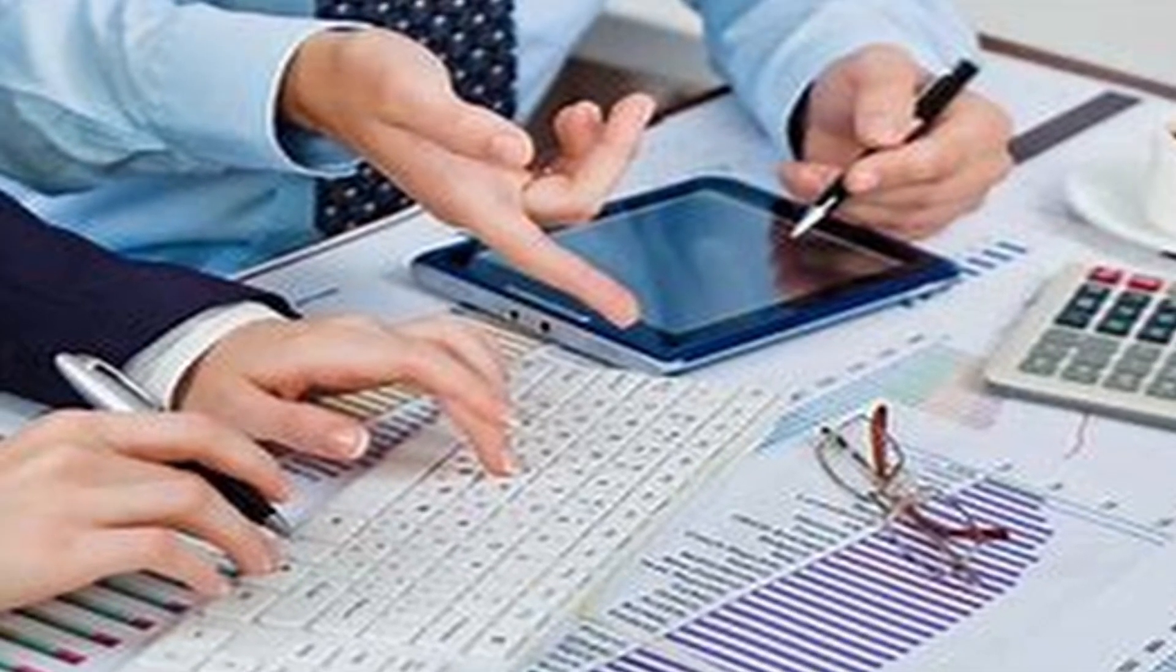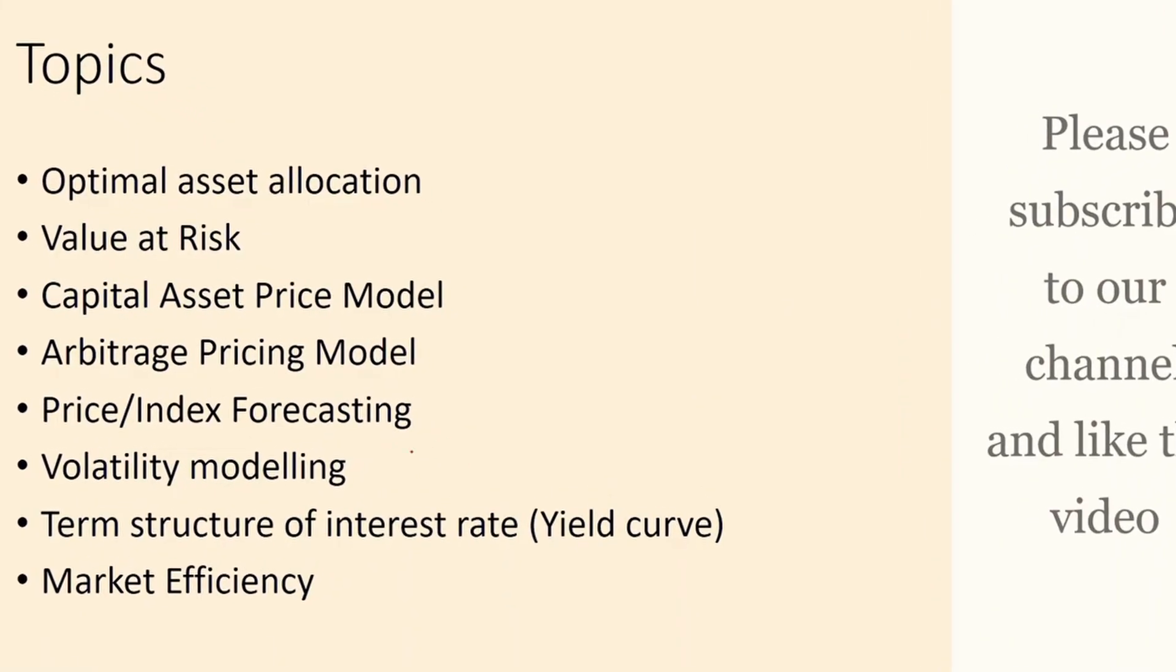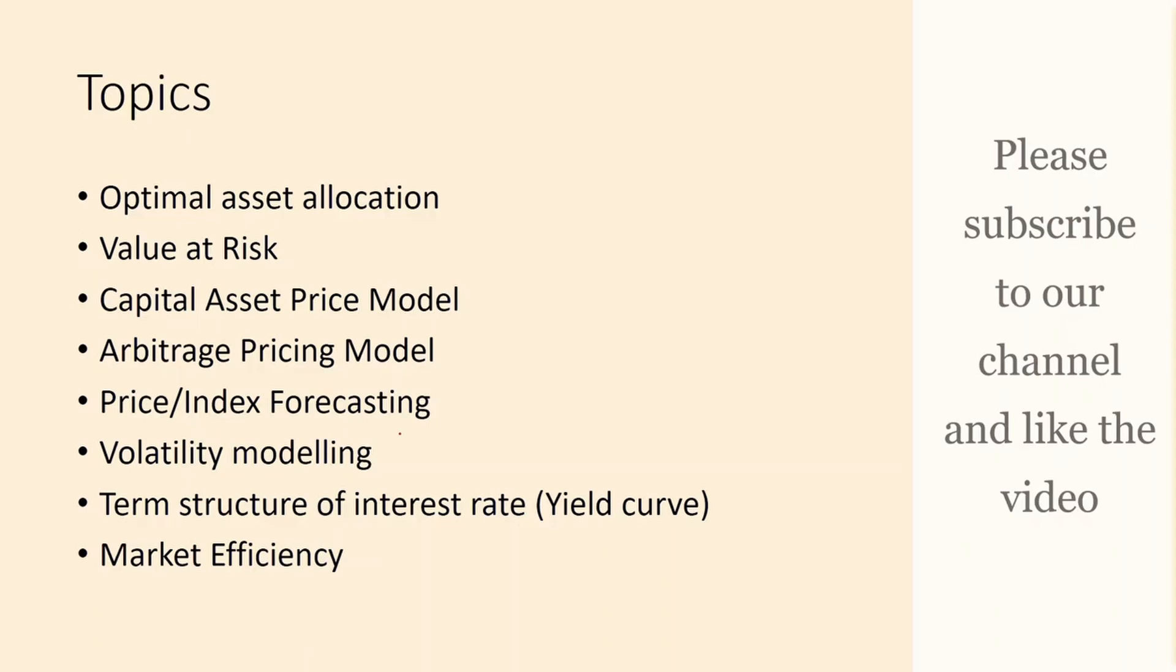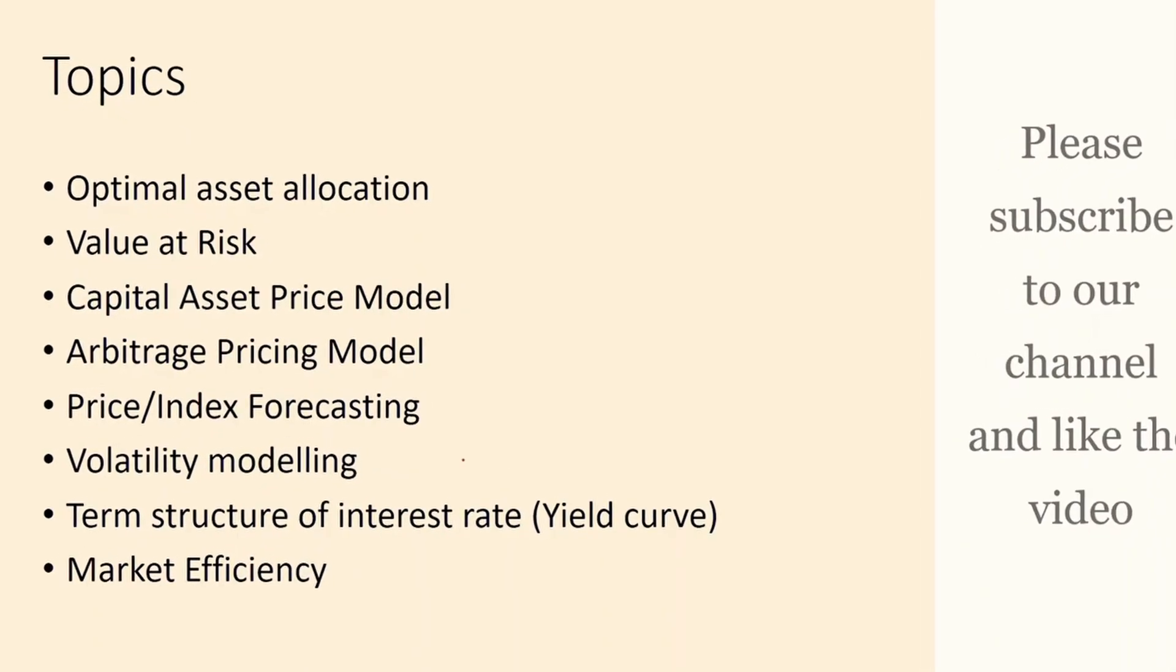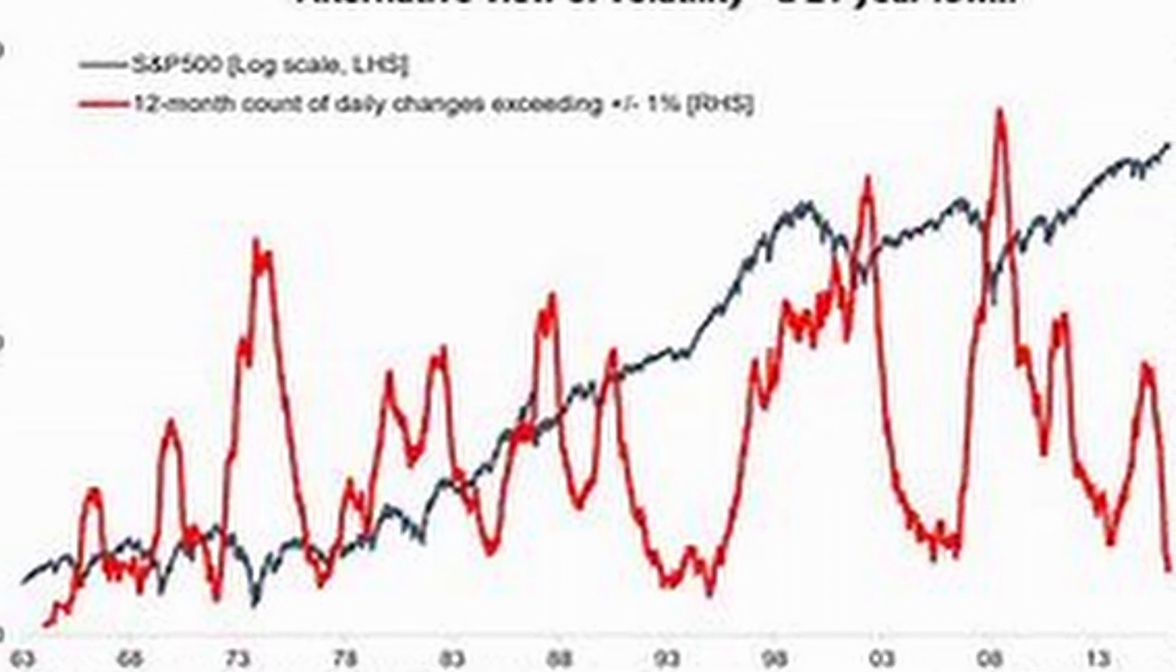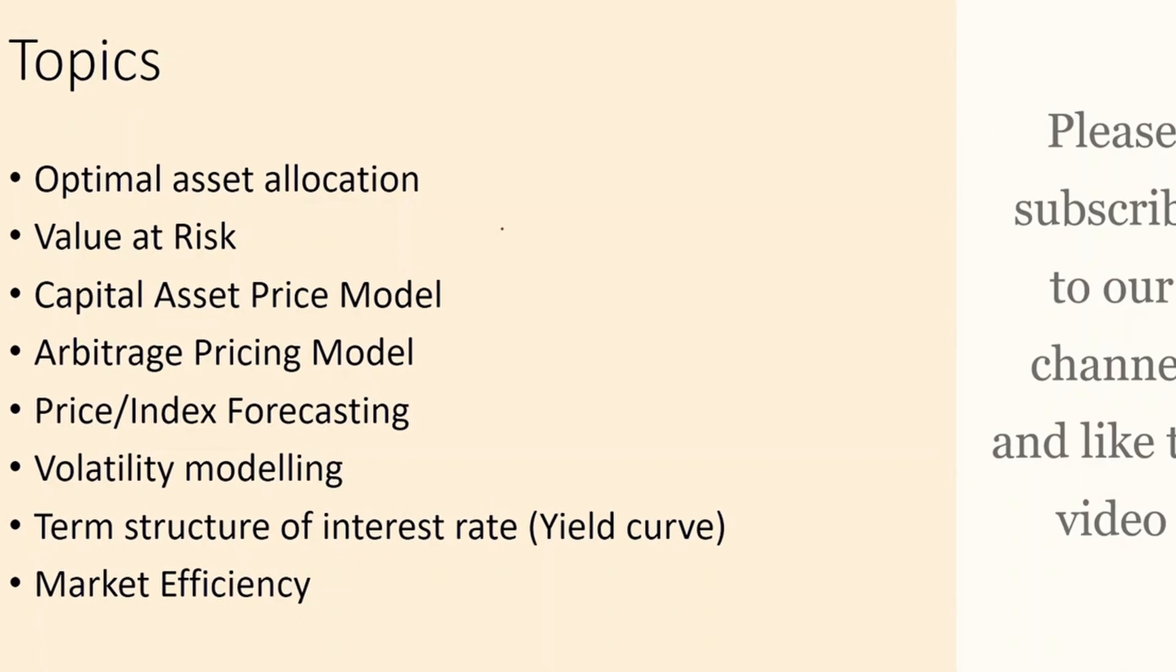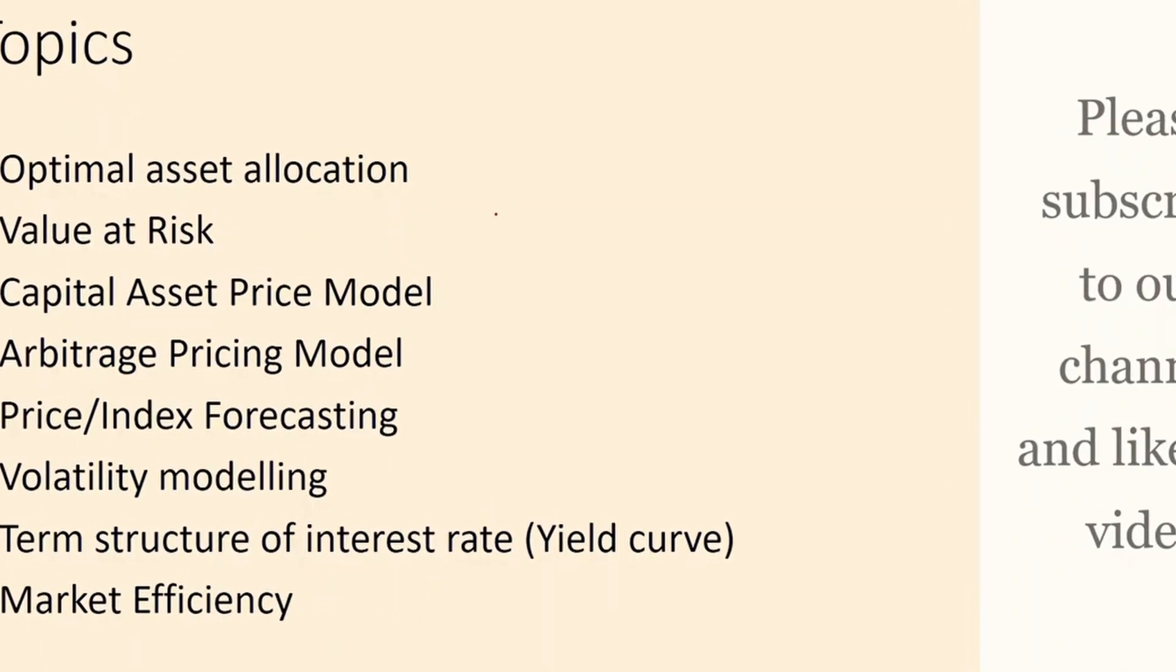What are the topics that come under financial econometrics? It's not limited to the list you can see on the screen, but some of the most important ones are these. First one is optimal asset allocation, which is very important for portfolio management.